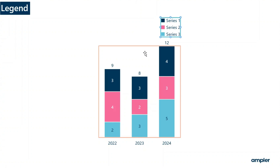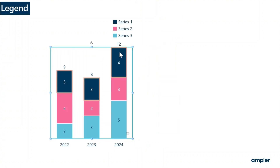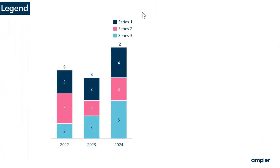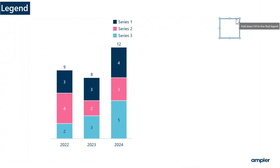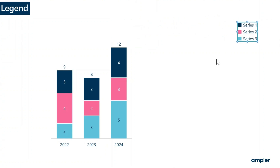When the legend is positioned in one of the anchor points, the legend will move along when you move the chart. Alternatively, you can select free float mode. To move the legend in free float mode, hold control and position the legend in the desired position.